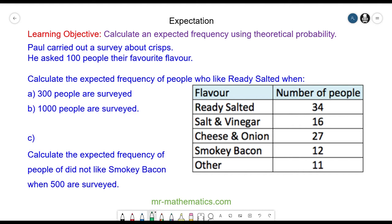The first thing I'm going to do is write the experimental probability as a decimal. So the probability of choosing Ready Salted is 34 people out of a sample of 100. And as a decimal this is 0.34. Of the 300 people surveyed, 0.34 multiplied by the sample of 300 will choose Ready Salted.